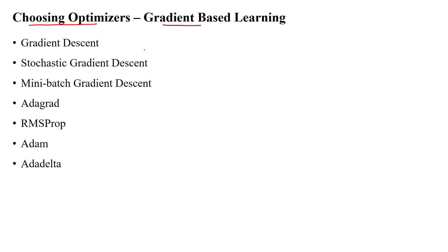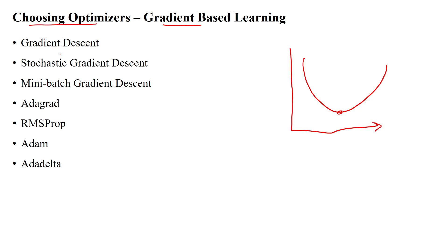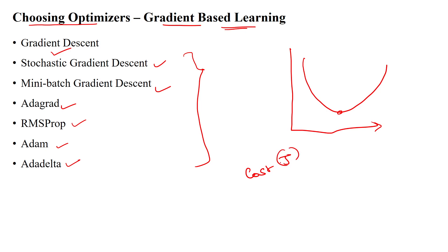Another important aspect of gradient-based learning is choosing a suitable optimizer from the available options — gradient descent, stochastic gradient descent, mini-batch gradient descent, AdaGrad, RMSProp, Adam, and AdaDelta — to calculate the optimized cost value, reduce training time, reduce loss, and improve model performance. These optimizers are explained in other videos. In summary, gradient-based learning requires choosing the right activation functions, right output units, right optimizers, and the right cost function for a given problem statement.